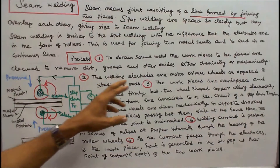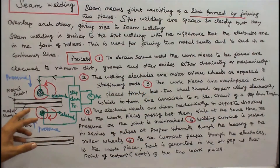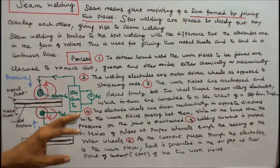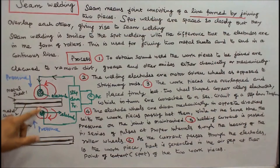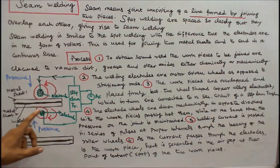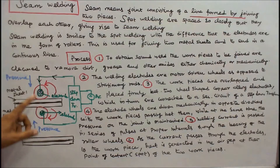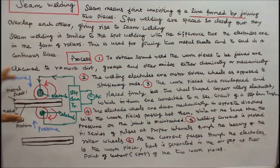Number 2: The welding electrodes are motor-driven wheels, as opposed to stationary rods. Number 3: The workpieces are overlapped and placed firmly between two wheel-shaped copper alloy electrodes, which in turn are connected to a secondary circuit of a step-down transformer. Number 4: The electrode wheels are driven mechanically in opposite directions with the workpieces passing between them, while at the same time the pressure on the joint is maintained.